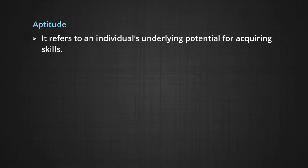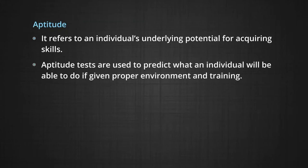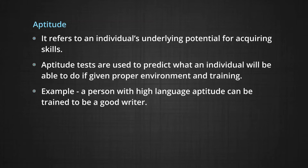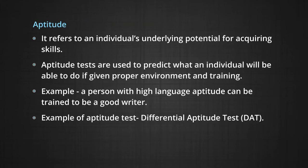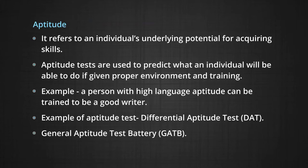Aptitude refers to an individual's underlying potential for acquiring skills. Aptitude tests are used to predict what an individual will be able to do if given a proper environment and training. For example, a person with high language aptitude can be trained to be a good writer. Examples of aptitude tests include the Differential Aptitude Test (DAT) and the General Aptitude Test Battery (GATB).